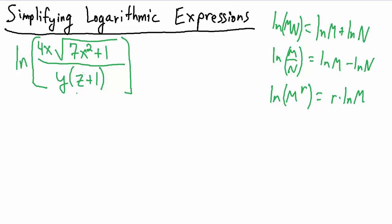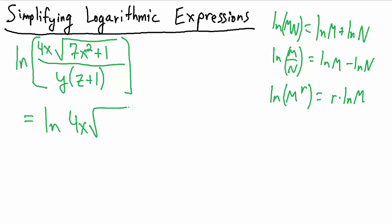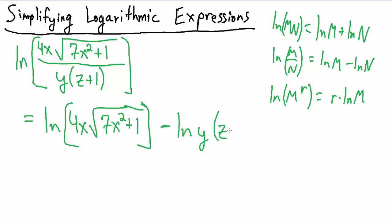First we use the quotient rule, with the entire top as m and the entire bottom as n. That gives us natural log of [4x times the square root of 7x squared plus 1] minus natural log of [y times (z plus 1)]. The square brackets aren't really necessary but aren't a bad idea for clarity.